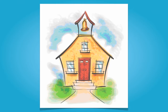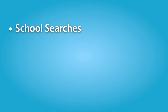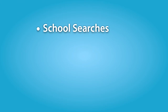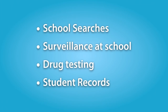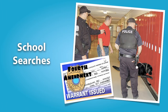The privacy rights of students are usually implicated in one of four contexts: school searches, surveillance, drug testing, and student records. Let's briefly review the current state of the law in each of these four areas. First, school searches.